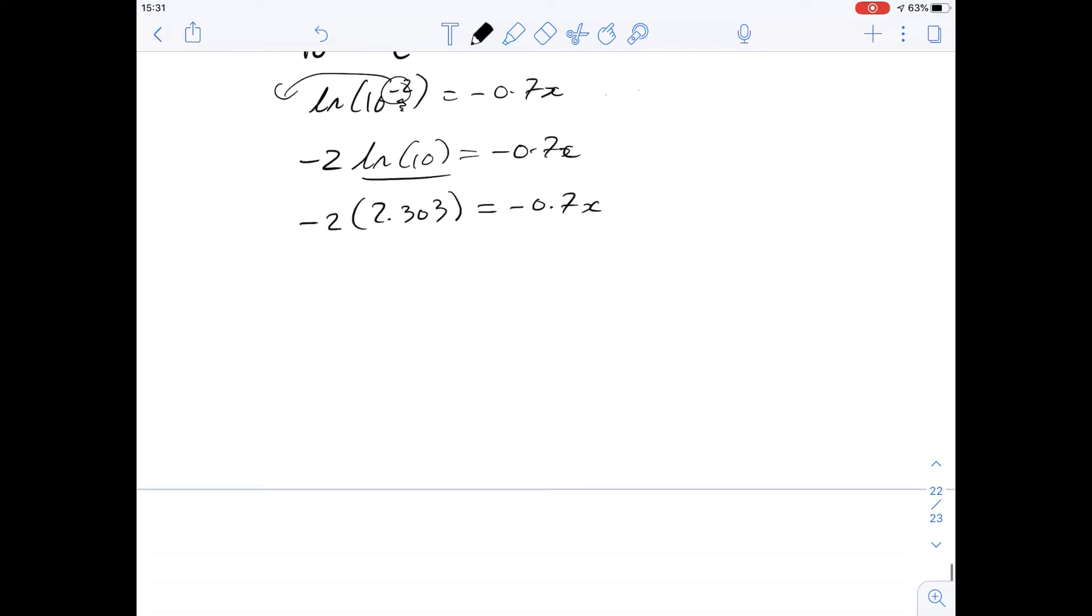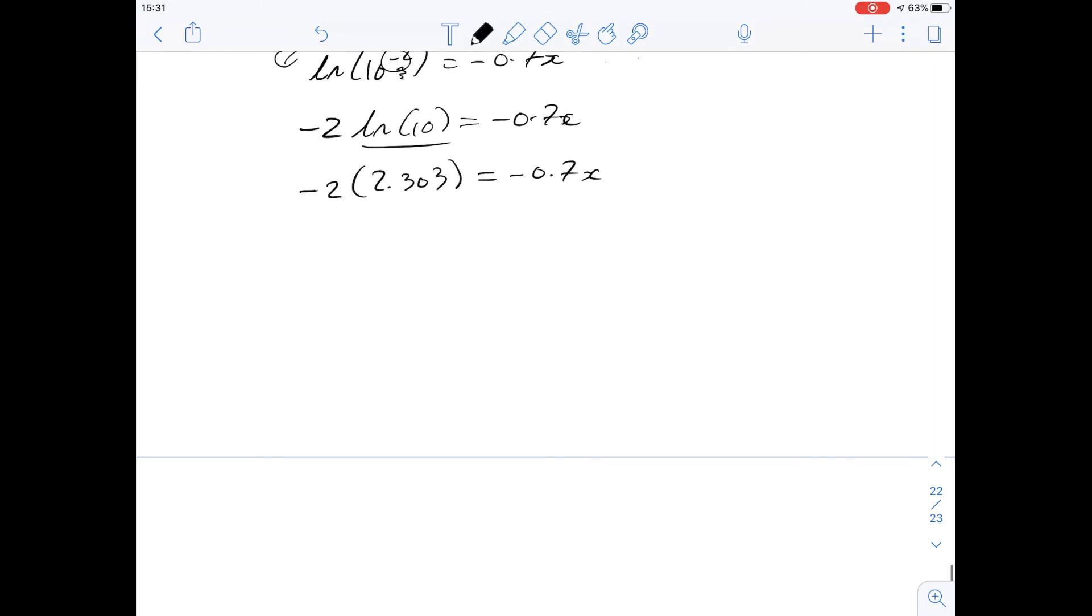So then we just need to solve for x. So if we were to do that we get x is equal to minus 2 over 2.303 divided by 0.7 and obviously the minuses cancel and you end up with an answer if you go through and do the division with 6.58 and of course because our answers are rounded in the question that gives us an answer of 6.6 centimeters. So that means the answer for number 75 is going to be C.